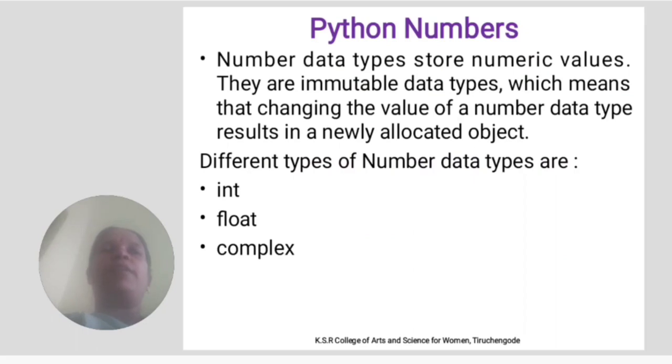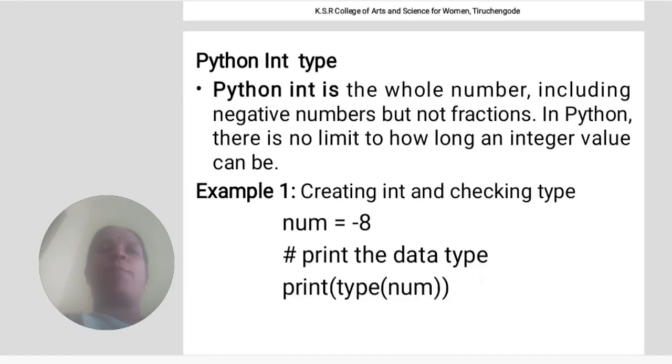Today we will learn about Python numbers. Number data types store numeric values. They are immutable data types, which means that changing the value of a number data type results in a newly allocated object. Different types of number data are int, float, and complex.